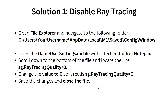Open the GameUserSettings file with a text editor like Notepad. Scroll down to the bottom of the file and locate the line 'ray tracing quality equals 3' and change the value to zero, so it reads 'ray tracing quality equals 0'. Save the changes and close the file.